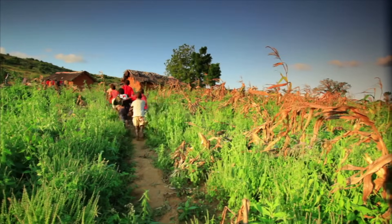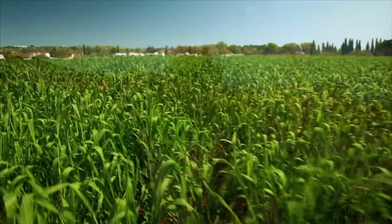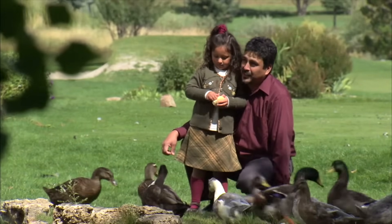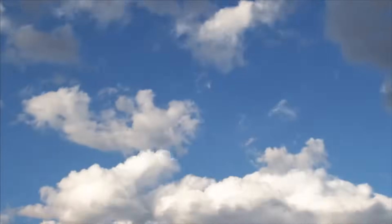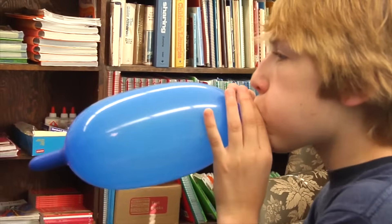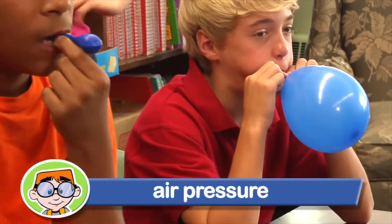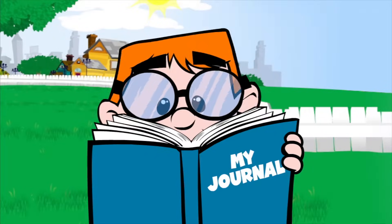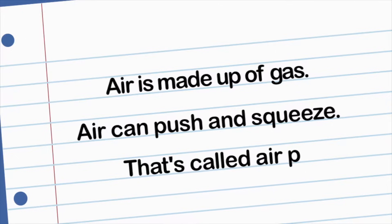Air is important for just about every living thing on Earth. Plants need gases from the air to make food. Animals and people need oxygen gas that's in the air to breathe. Even though you can't see air, air pushes and squeezes things all around us. Air takes up space. When you blow air into a balloon, the gas molecules in the air fill the balloon. That push is called air pressure. Balloons work because of the push of the air pressure. So air is made up of gas, air can push and squeeze — that's called air pressure. Got it!